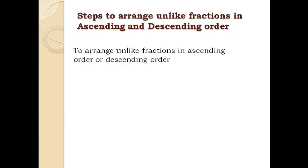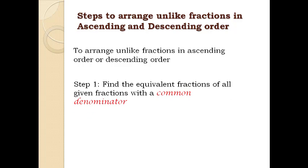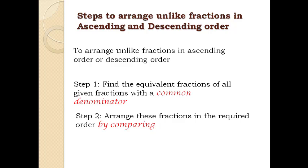To arrange unlike fractions in ascending or descending order, follow two steps. Step 1: find the equivalent fractions of all given fractions with a common denominator. Step 2: arrange these fractions in the required order by comparing.